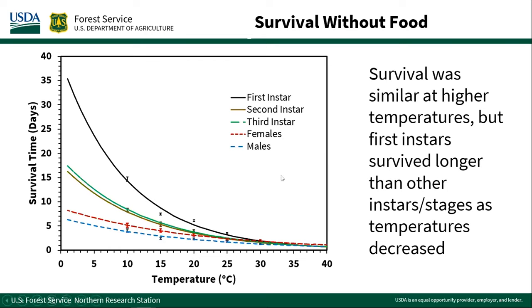You can also produce exponential curves that would predict at different temperatures how long each instar or stage would survive. At higher temperatures, survival is pretty similar across all stages. But as you get to cooler temperatures, first instars are definitely the most able to survive longer. As you increase the instar, second and third instars survive less, and adults survive even less. This may have implications for transport — adults in particular might end up in airplanes or on ships and don't survive very long.